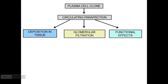In the kidney, depending on the properties of these proteins and their affinities, they may deposit in the tissue, or they may filter through the glomerulus and cause tubular problems. I will mostly talk about these two categories, but some paraproteins don't do either — they can cause functional problems, for example affecting the coagulation cascade. I will not focus on that in this short video.